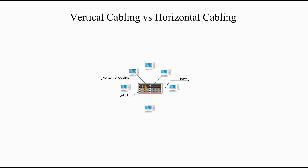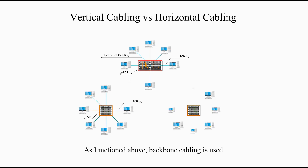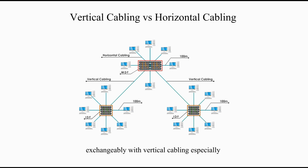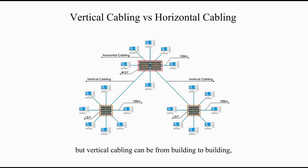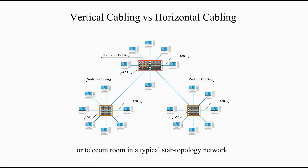Vertical cabling versus horizontal cabling: backbone cabling is used interchangeably with vertical cabling, especially when the backbone cabling passes through from floor to floor. But vertical cabling can be from building to building or equipment room to equipment room — not necessarily vertical physically. Horizontal cabling runs from workstations to the IDF or telecom room in a typical star topology network.